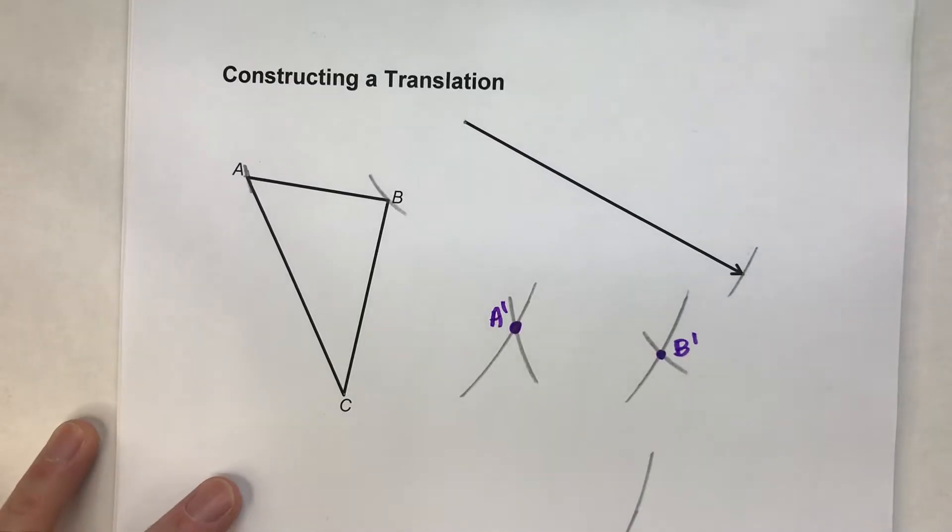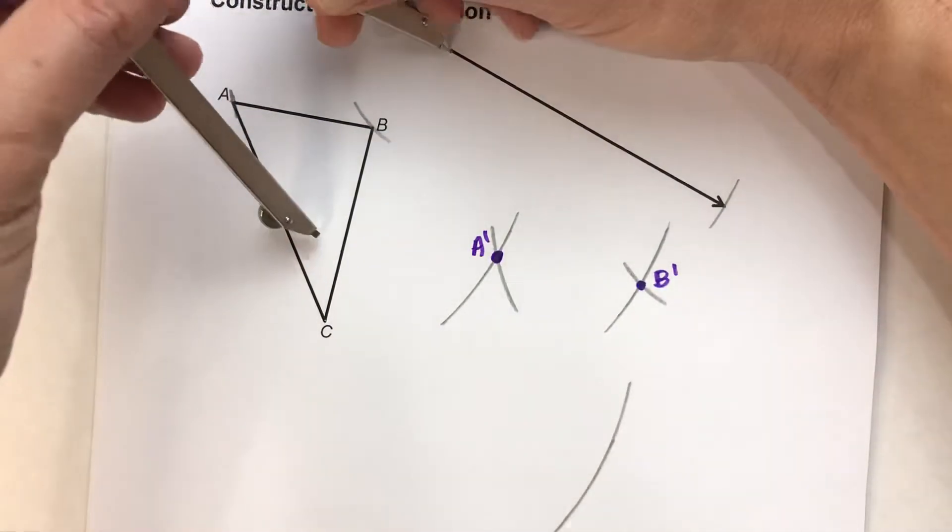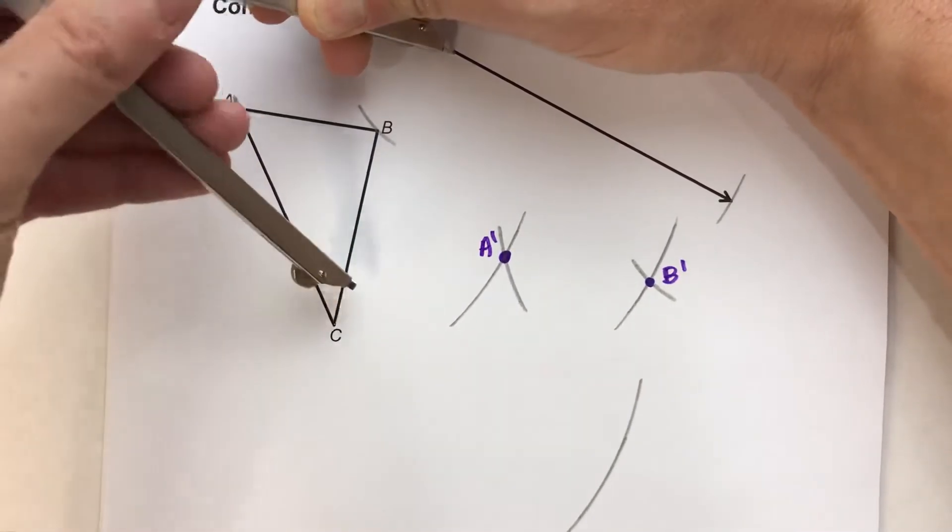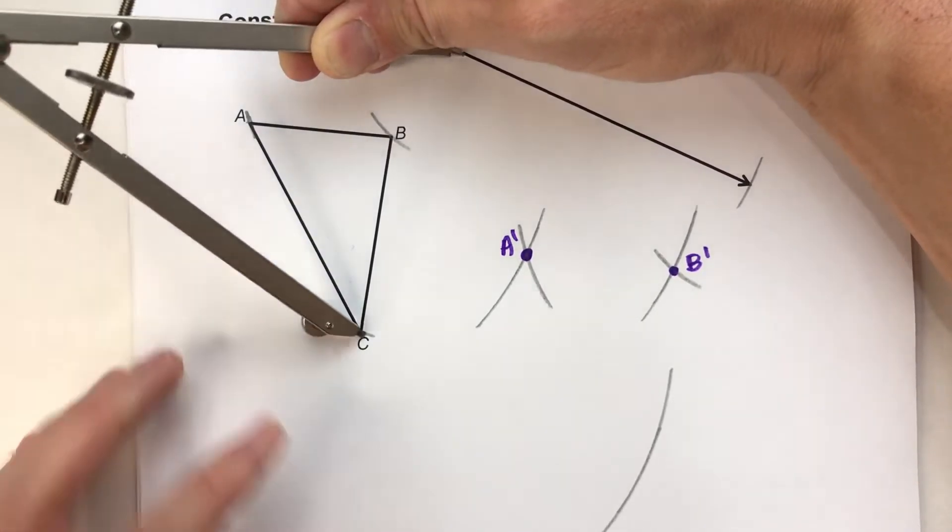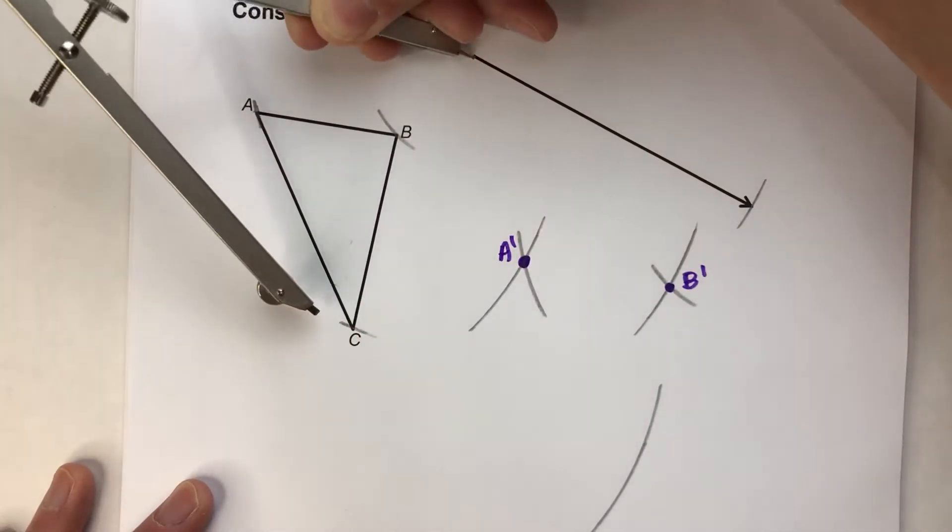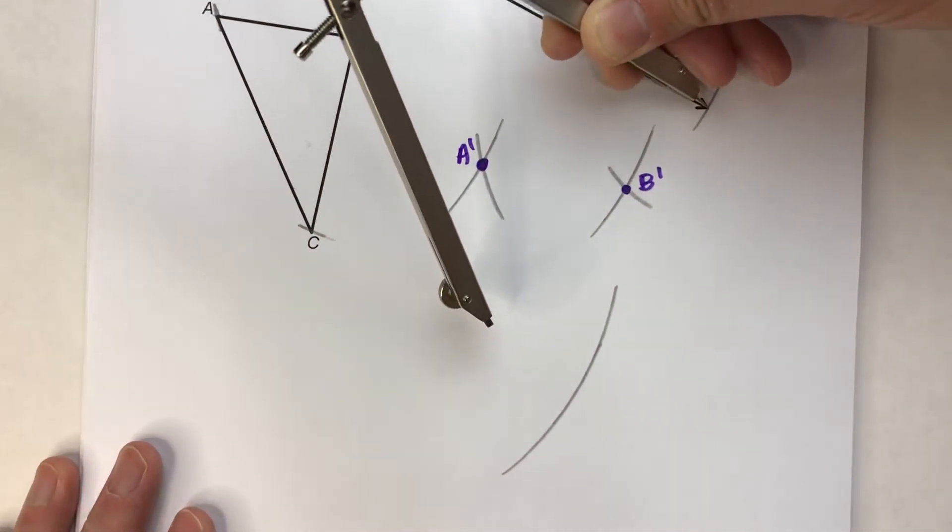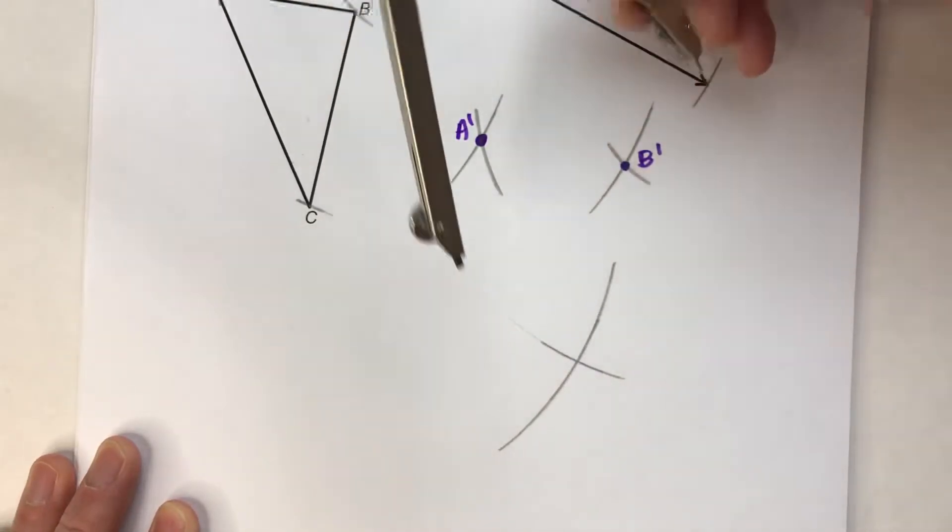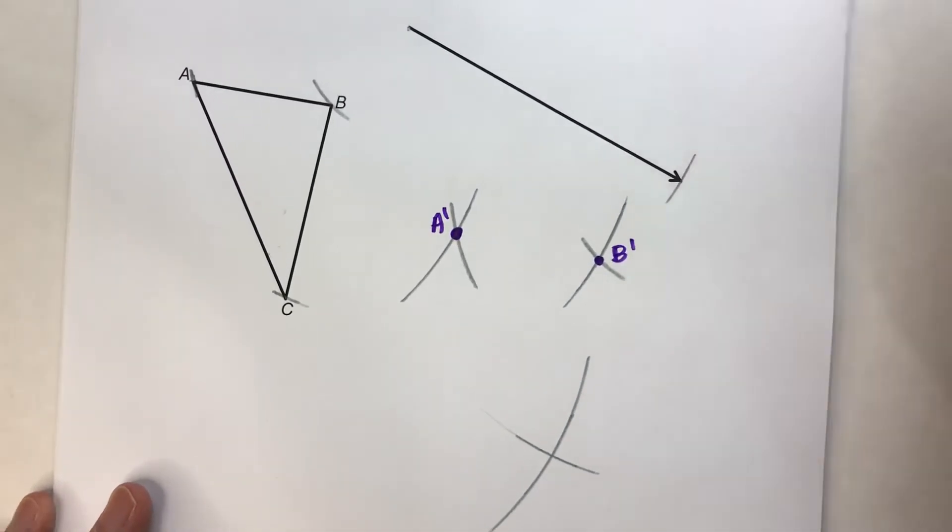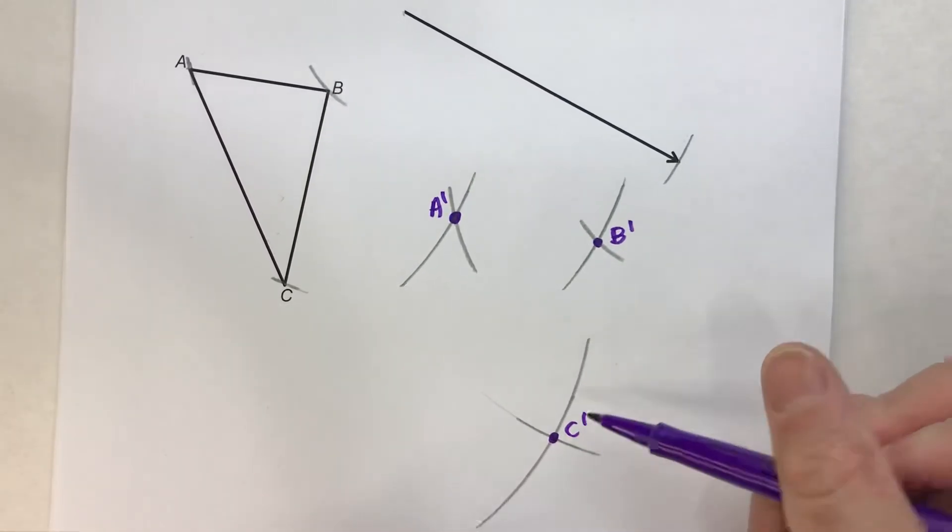And then similarly, the end of the vector to point C. Right there. And then I'm going to repeat that distance at the other end of the vector. And that's my C prime.